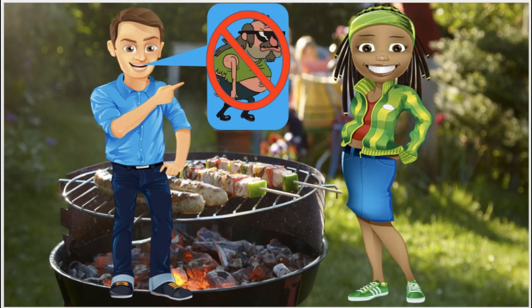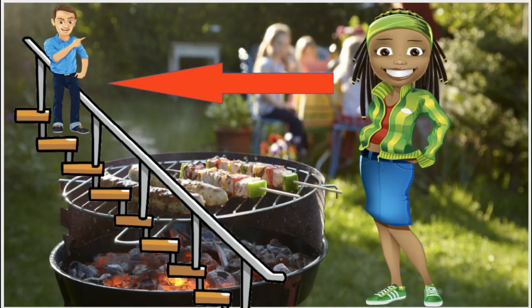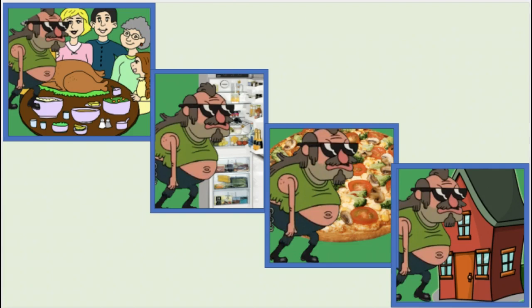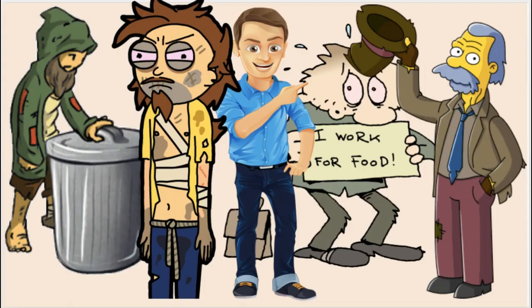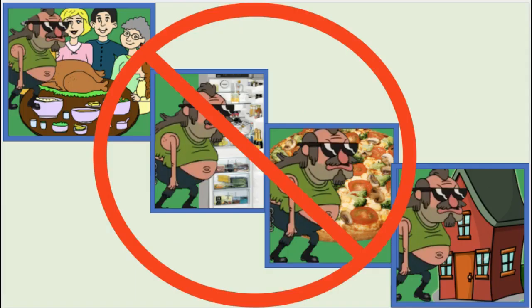Oh no, you're right. I better not invite him to the barbecue. Alright ladies and gentlemen, let's take a closer look at what just happened. Cindy argues that if Frank takes the innocent first step of inviting Eddie to his barbecue, then he will set off a chain reaction of causes that will lead to him and his family being homeless. Cindy commits the slippery slope fallacy because it's unlikely that the chain reaction will actually occur.